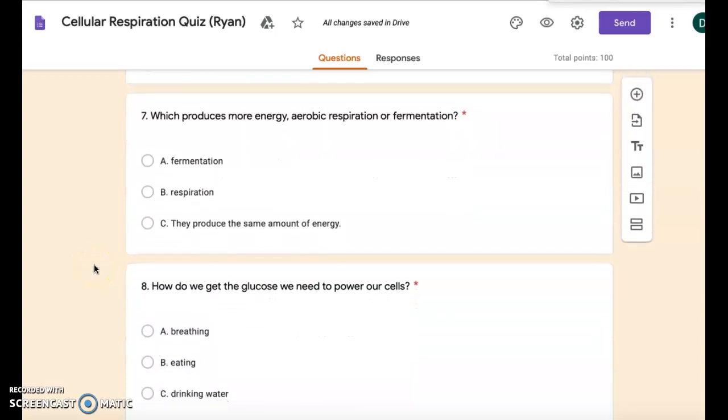Number seven: Which produces more energy, aerobic respiration or fermentation? A: fermentation. B: respiration. C: they produce the same amount of energy.